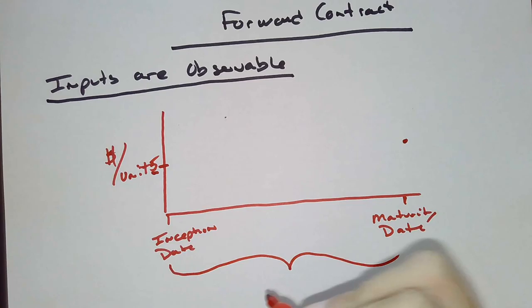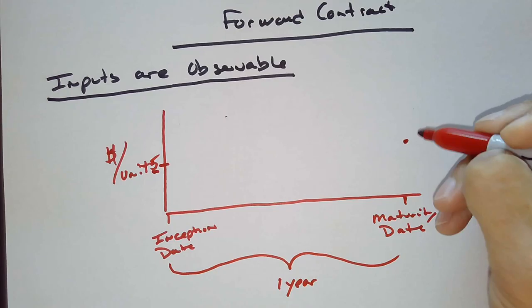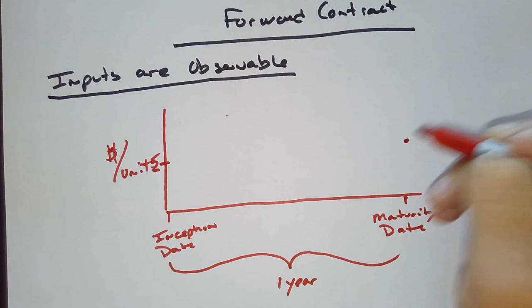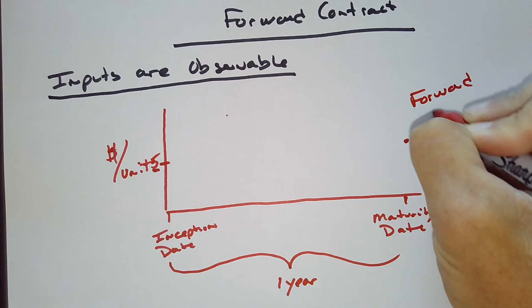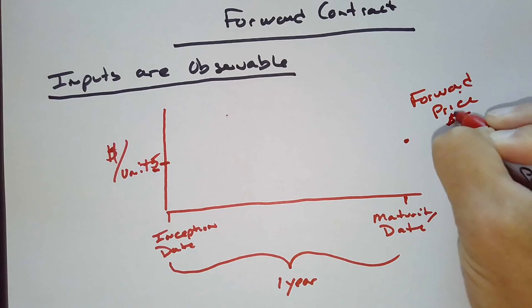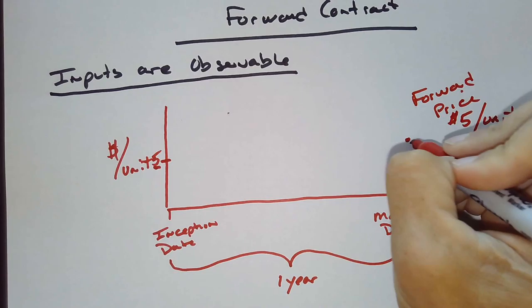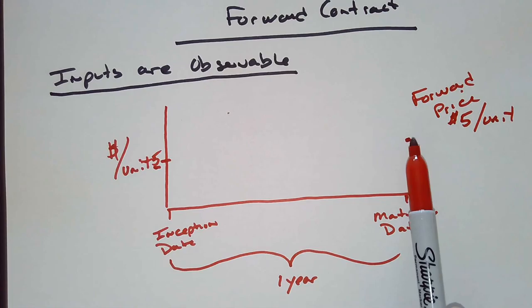Now, we are looking at this period of time. Maybe this is one year. And we're looking at our value, if you will. And let's assume when we entered into this, the price or the forward price one year out was indeed $5 per unit. This price. So we are entering into this transaction. The forward price is $5 per unit. Everyone agrees that that is the fair value. That the fair value is zero at this point in time.